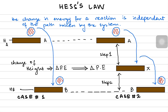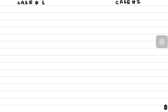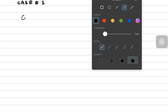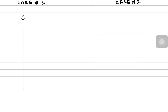Let me give you an example. In case one, I am taking pure carbon and pure hydrogen and combusting them directly. I take pure carbon, combust it in the presence of pure oxygen to make carbon dioxide gas. The enthalpy change for this is the standard enthalpy of combustion for pure carbon.